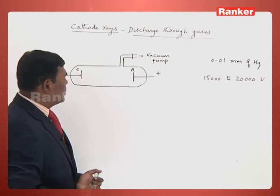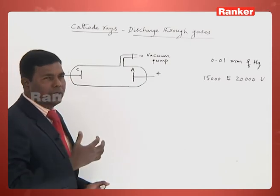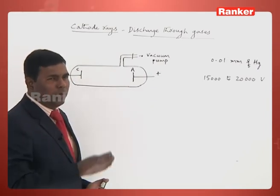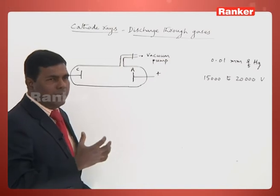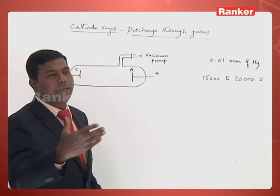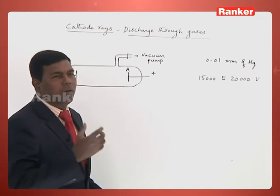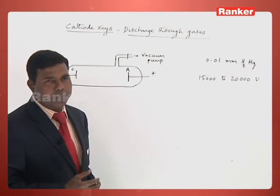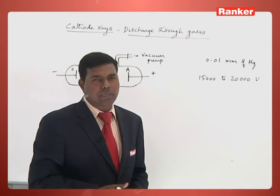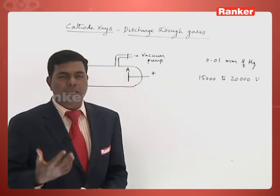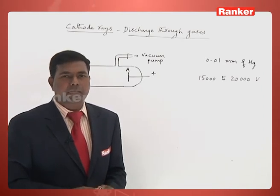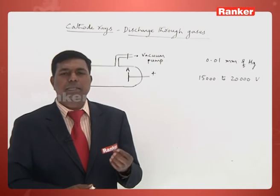It is also observed that there is a fluorescent glow behind the wall of the anode. This glow indicates that there is a stream of rays moving from the cathode and reaching the anode. These rays are called cathode rays because they emerge from the cathode.